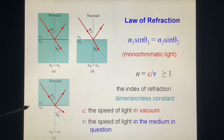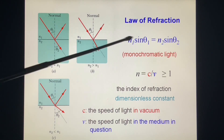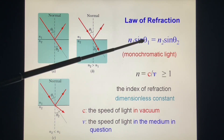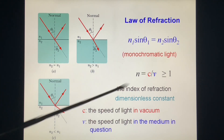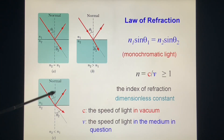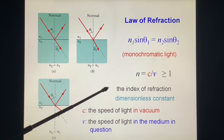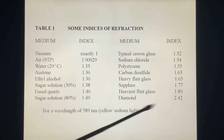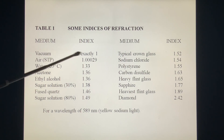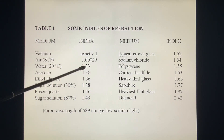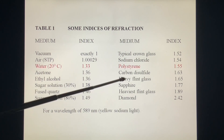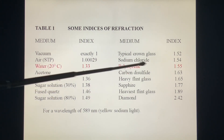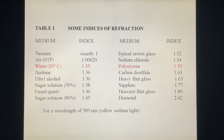Conversely, if n1 is larger than n2, then θ1 is smaller than θ2, and the light reflects in the other direction. Some example indices of refraction: vacuum is 1, water is 1.33, glass polymer is 1.5, and so on.